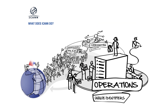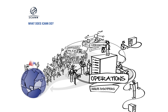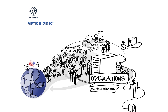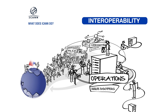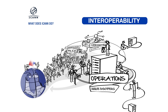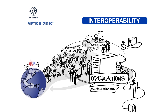Interoperability: ICANN's work enables new technologies to flourish while maintaining interoperability across the global Internet. For example, management of the unique protocol identifiers allows communication using secure connections between users.